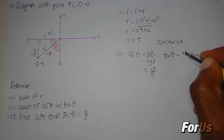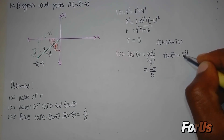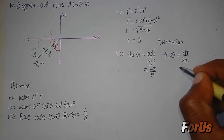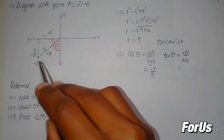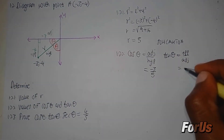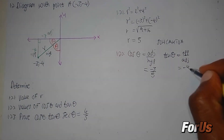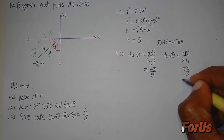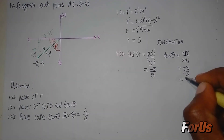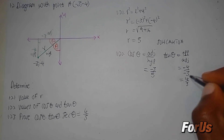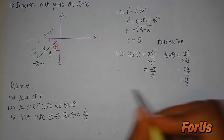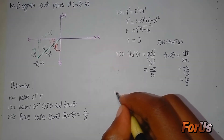For tan theta, it is opposite divided by adjacent. The opposite side is negative 4 and the adjacent is negative 3. The value is 4 over 3, since negative divided by negative gives a positive result.